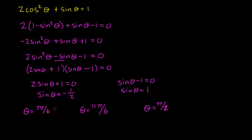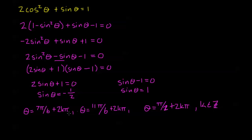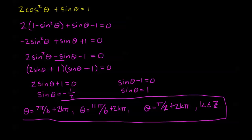These are all solutions within one period between 0 and 2π. Adding 2kπ to all of these, where k is an integer, gives us all possible solutions — all infinitely many of them, but we've pinpointed exactly where they are.